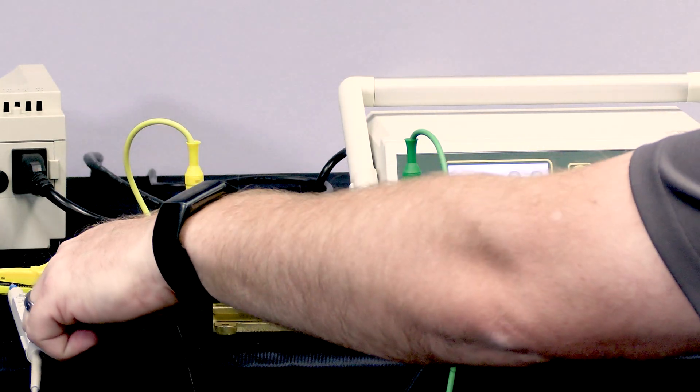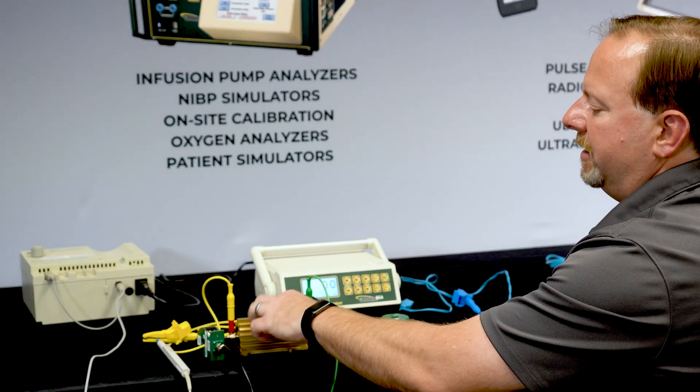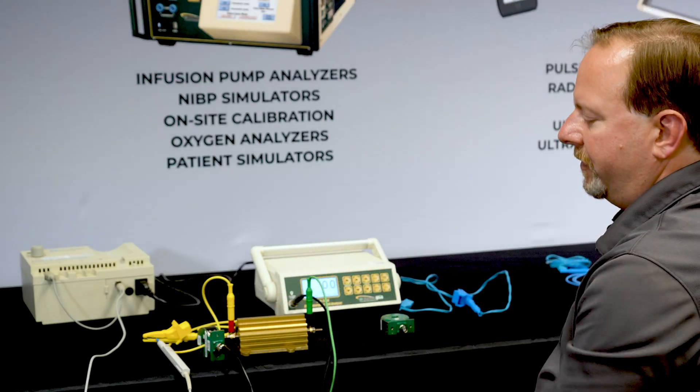The path goes from the scalpel through the current transformer to the test load—this is our patient—through the table back to earth ground.